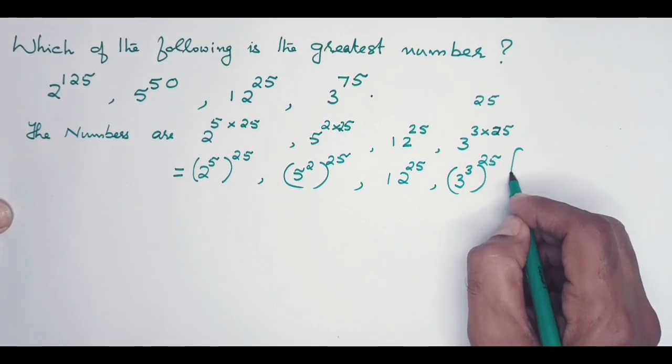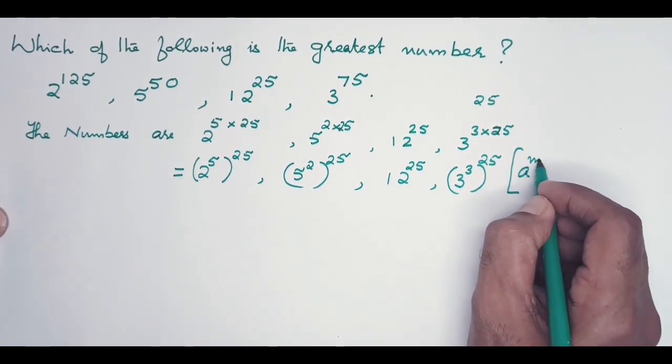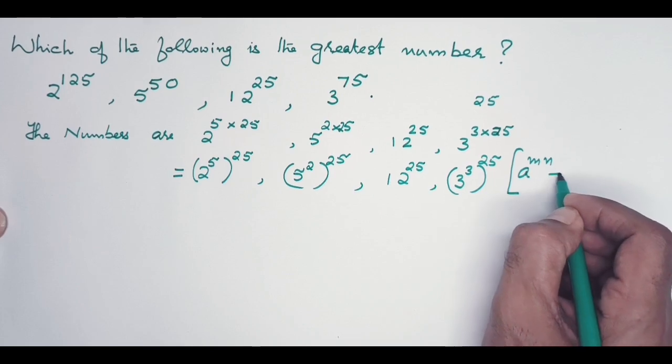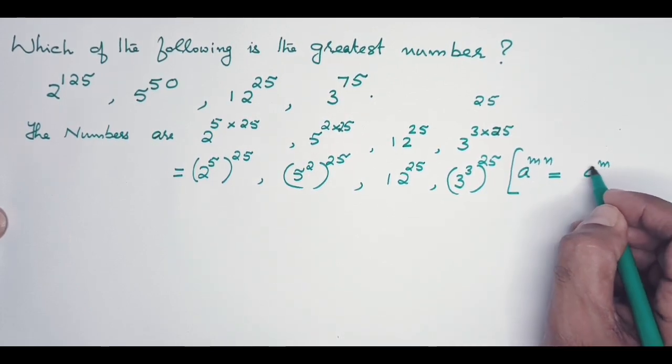This is done on the basis of this law of index: a to the power m times n equals (a to the power m) to the power of n.